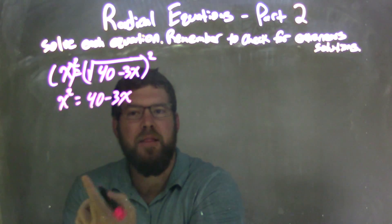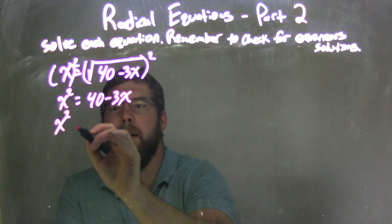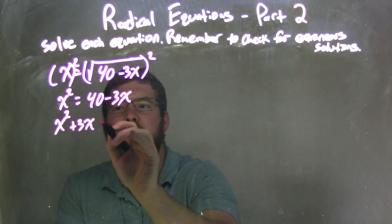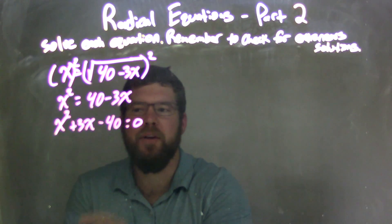Then I'm going to bring everything over to the left-hand side, so we have x squared plus 3x minus 40 equals 0. Now we need to factor.